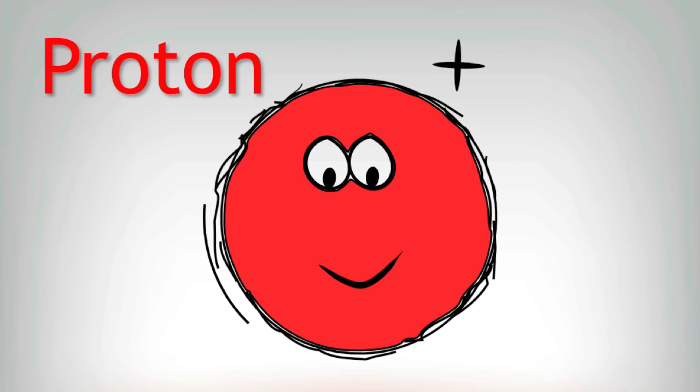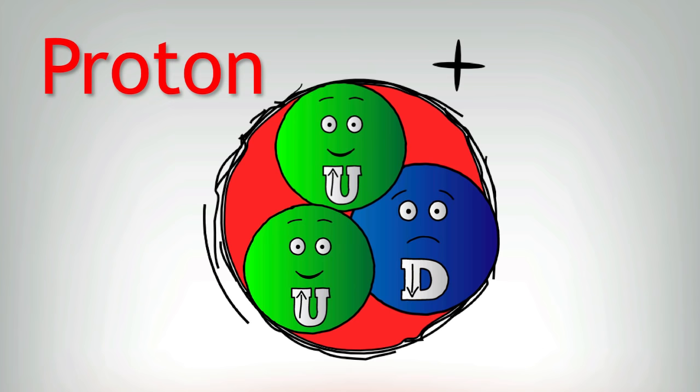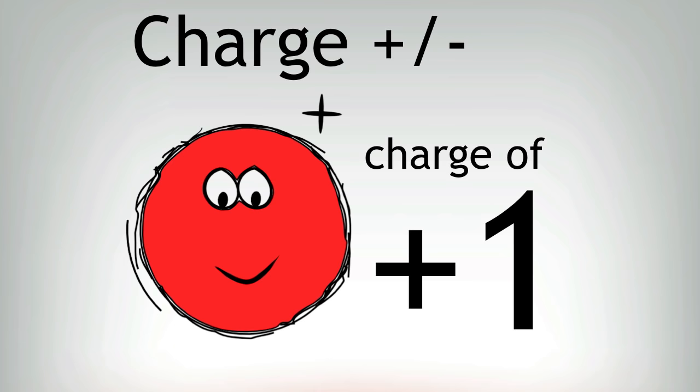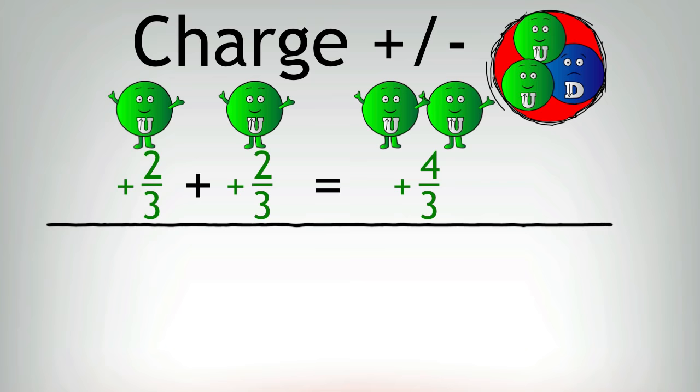The proton was found to be made of two up quarks and one down quark. Now, we know that the charge of a proton is plus one. If we look at this in terms of the fractional charges given to quarks, one up quark would have a charge of plus two thirds, so therefore two up quarks would have an overall charge of plus four thirds. Adding in a down quark reduces the overall charge to three thirds, which is the equivalent of one.